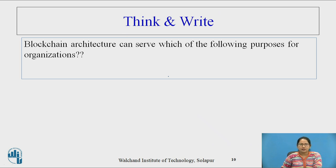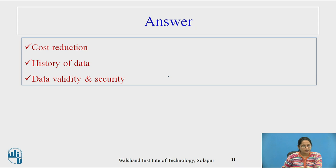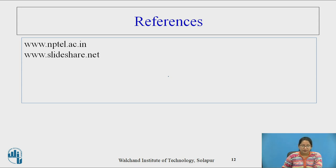Please pause the video and try to think and write down the answer: blockchain architecture can serve which of the following purposes for an organization? Cost reduction — yes. History of data is possible, as the public ledger consists of a database of history of all transactions. Data validity and security — yes, because each record is digitally signed. Blockchain is considered incorruptible, and the prime difference is that blockchain is a digital ledger that can be decentralized very easily.